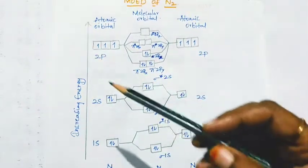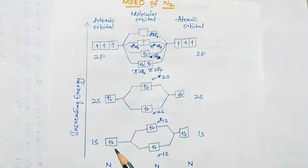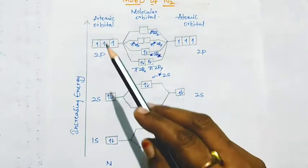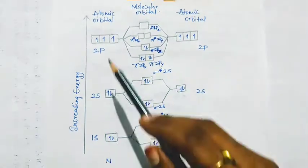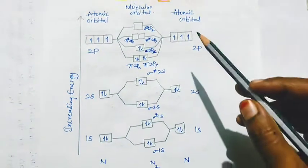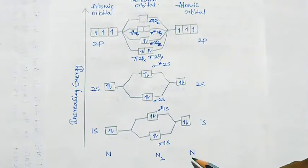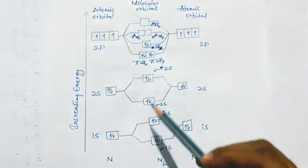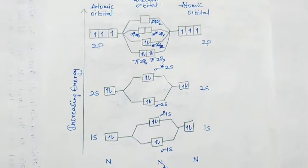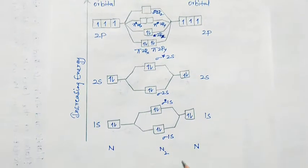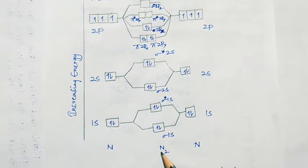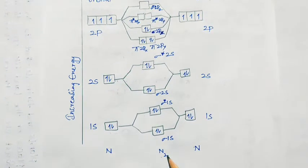This shows the increasing energy. We have drawn the 1s, 2s, and 2p atomic orbitals of one nitrogen atom, and here are the atomic orbitals of the other nitrogen atom. Both of them combine to form the molecular orbitals.